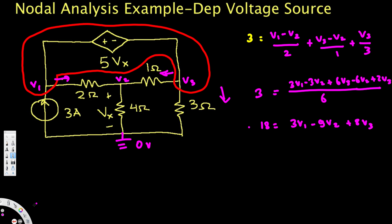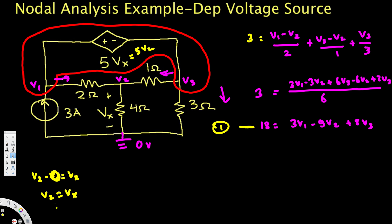Now, notice we have a dependent voltage source labeled with Vx. The plus sign represents higher potential and minus represents lower potential. So V2 minus zero equals Vx, meaning V2 = Vx. Therefore the dependent voltage source equals 5Vx = 5V2.